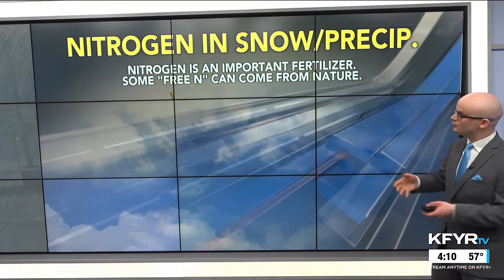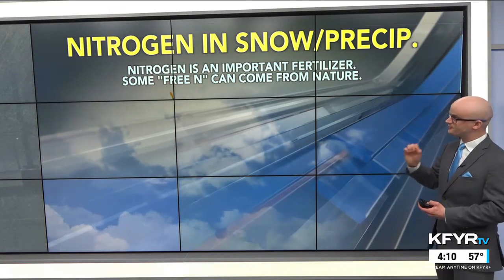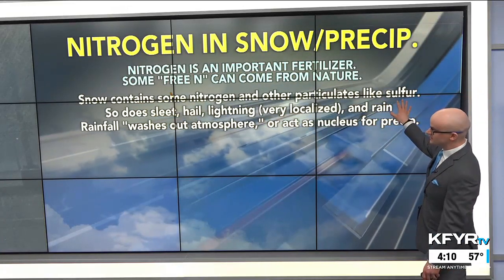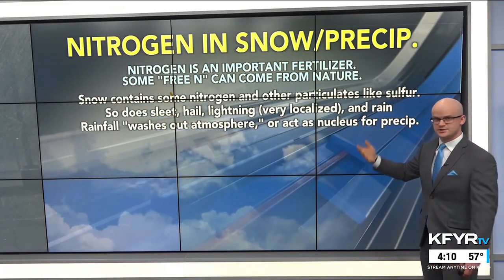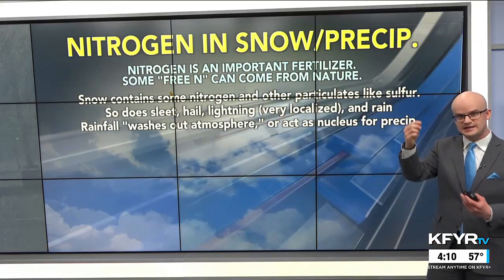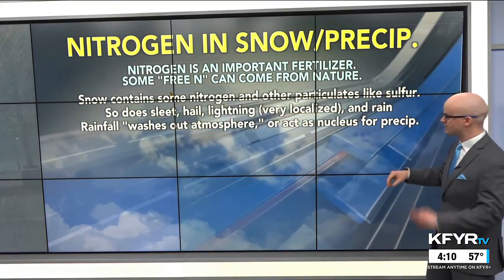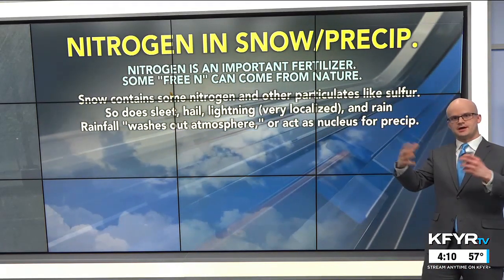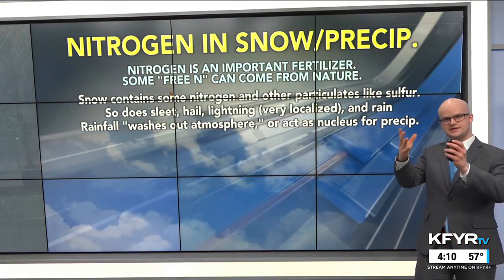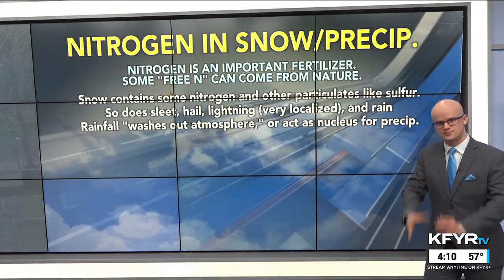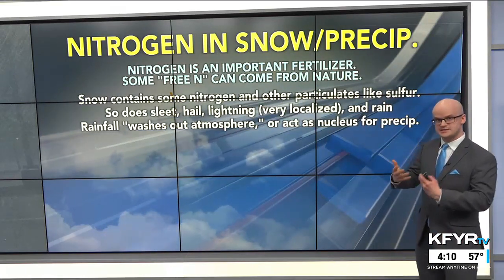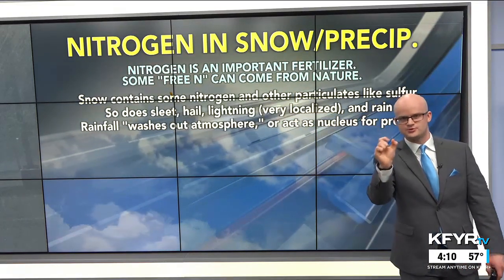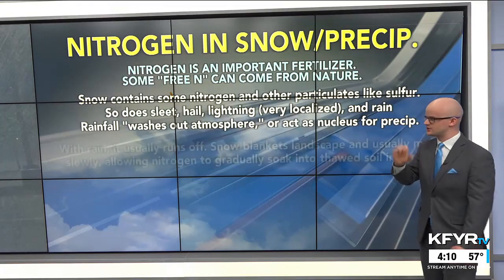Is that old adage actually true? Nitrogen is an important fertilizer, and there can be some free nitrogen from nature. In winter, that can be in the form of snow, which does contain a little nitrogen and other particles like sulfur — but so does other precipitation and even lightning. With rain, those compounds and particulates wash out of the atmosphere and come down to the ground as nitrate and ammonium. Those nitrogen-based compounds can also act as a nucleus for precipitation, so a raindrop or snowflake can form on those particulate matters in the atmosphere.